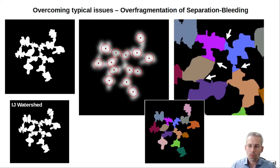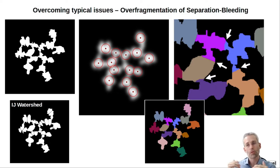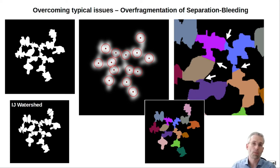The typical problem we see in watershed separations is that especially for irregular shaped objects we get typical over-fragmentations. That can be partially avoided with this and other tools based on seeds, like maxima used as seeds. However, they might also have some disadvantages: if you have objects of different sizes, the distance from the seed to the outside of the object varies depending on the object, which can quickly lead to bleeding into the neighboring object and incorrect separation positions.